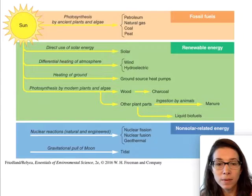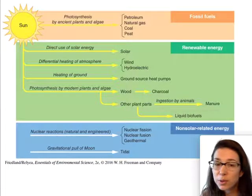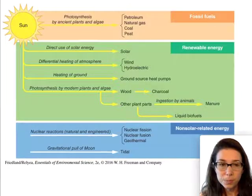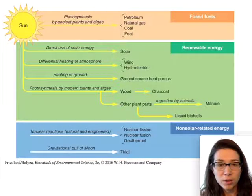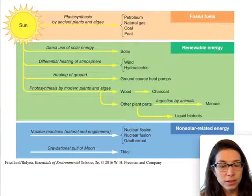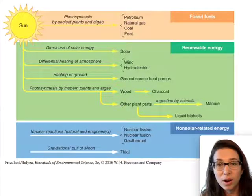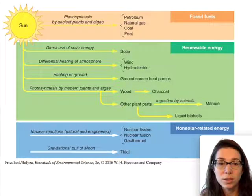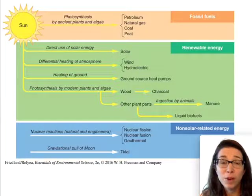A clever way to think about renewable and non-renewable resources is that they are all ultimately powered by the sun. Fossil fuels were once organic material powered by sunlight. The sun directly powers solar energy, and differential heating of the atmosphere by sunlight causes wind. This connects back to the energy pyramids we've seen, where sunlight enters ecosystems through primary producers. The sun is the primary source of energy on Earth.